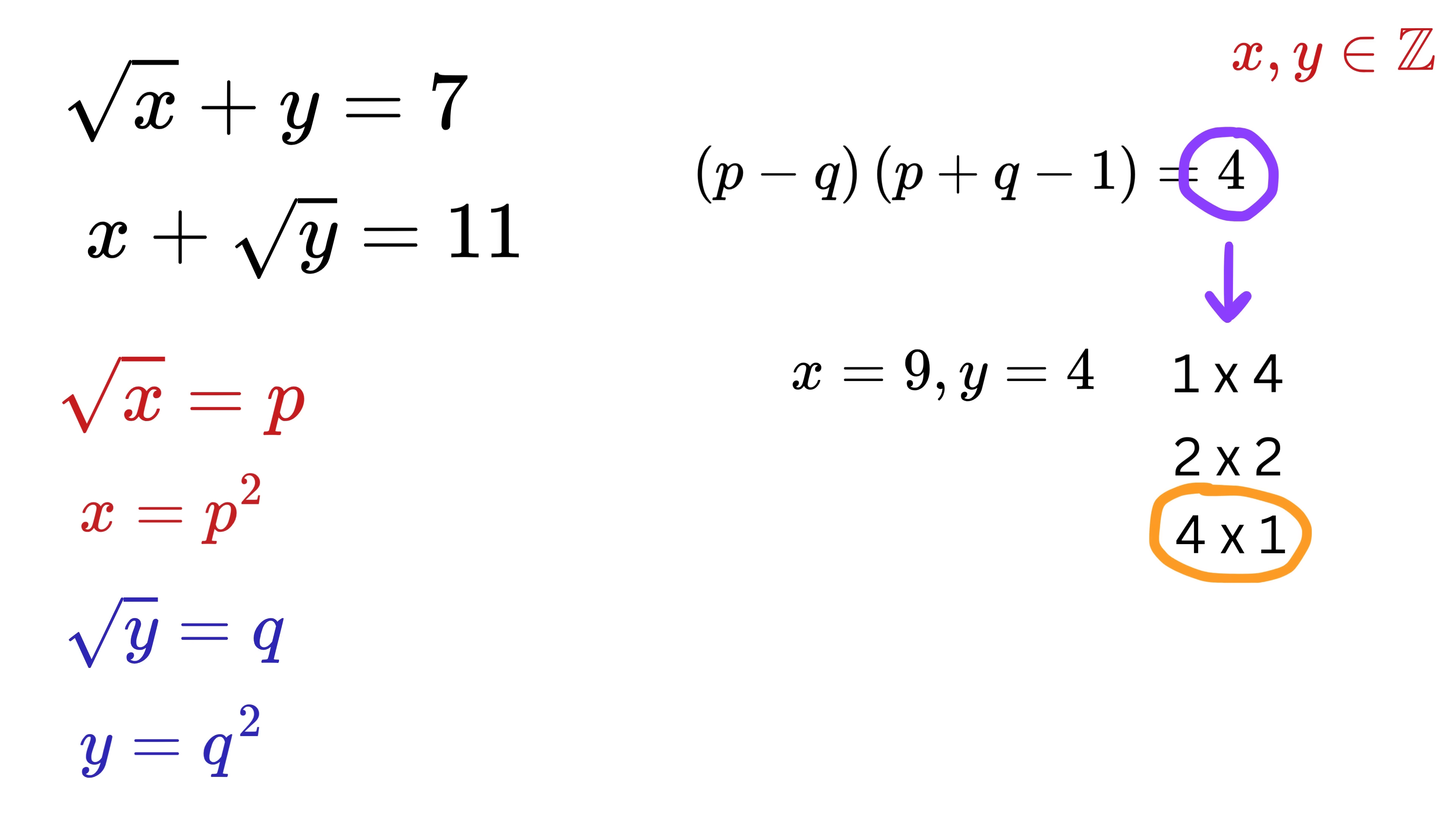Now consider the third case where p minus q is 4 and p plus q minus 1 is 1. This makes p plus q equals 2. Add both of them to get 2p equals 6, or p equals 3, which means x is 3² or 9. But now q equals minus 1, or square root of y is minus 1, which is again not possible. So we reject this solution as well.